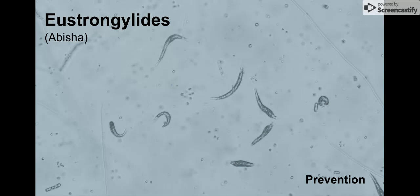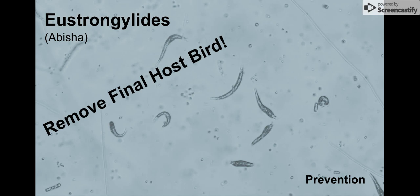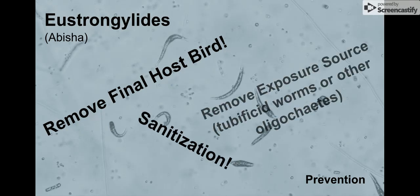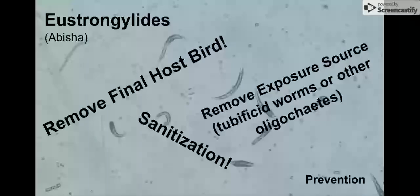The key to not having a fish infected with this parasite is prevention, which you can do by removing the final host — in our case a bird — by using sanitation techniques, and then removing the exposure of the source, which is the tubificid worms.